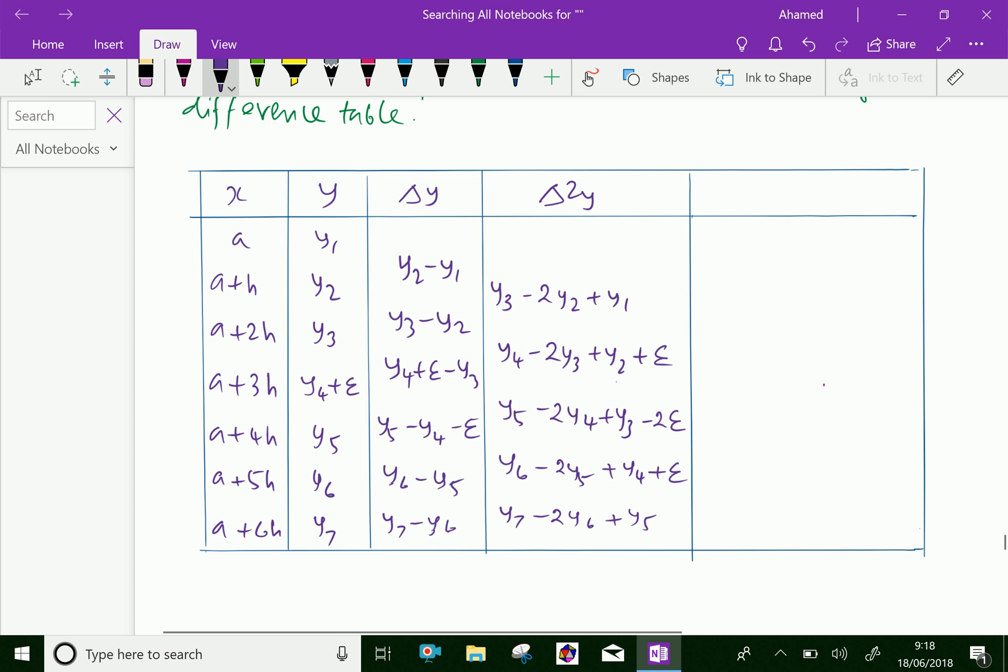Then third difference, that is delta cube y. Here y4 minus 3y3 plus 3y2 minus y1 plus e. Then next one y5 minus 3y4 plus 3y3 minus y2 minus 3e.